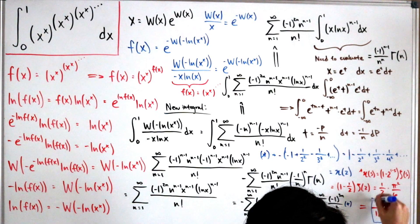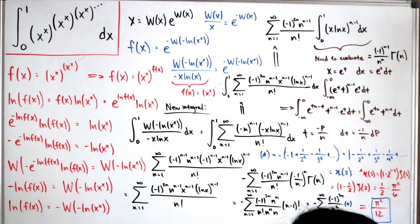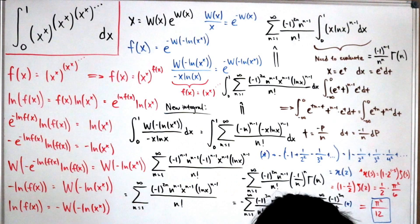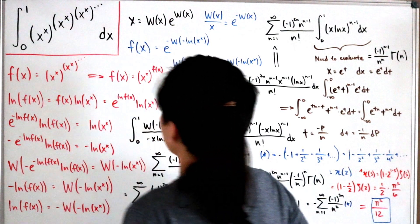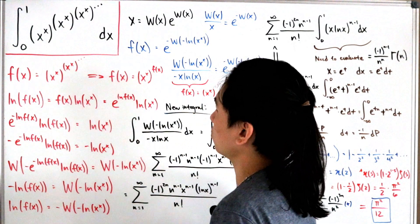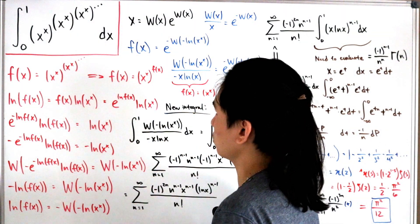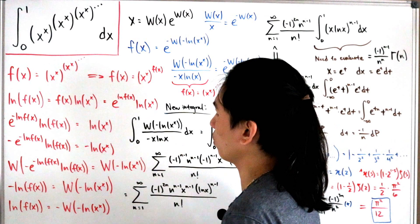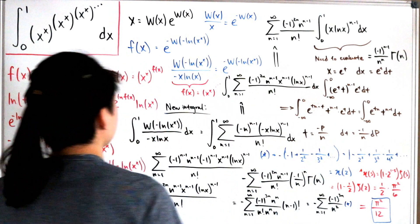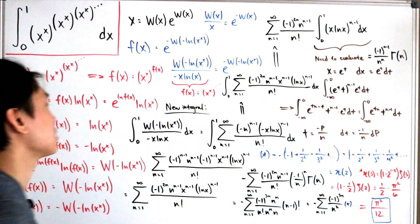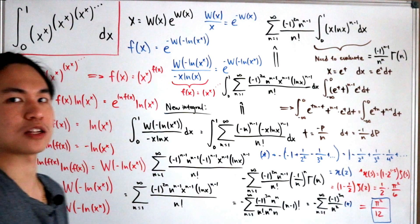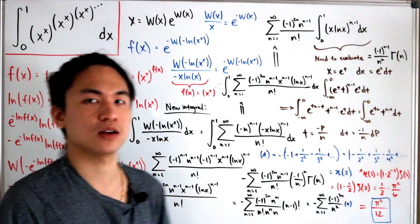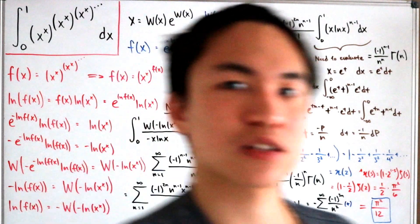So there we have it — the final answer in the blue box: the integral of the infinite power tower tetration equals π²/12. There are probably other methods to solve this, but I feel this is the straightforward approach. If you ever come across something like this, the Lambert W function is likely the way to go.